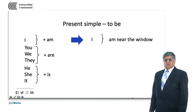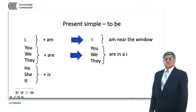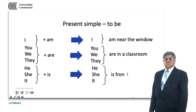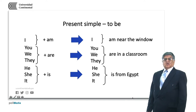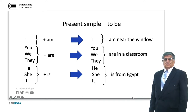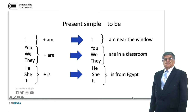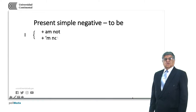'I am near the window.' 'You/they are in a classroom.' 'He, she, or it is from Egypt.' These are all three examples of the present simple in the affirmative grammatical form.